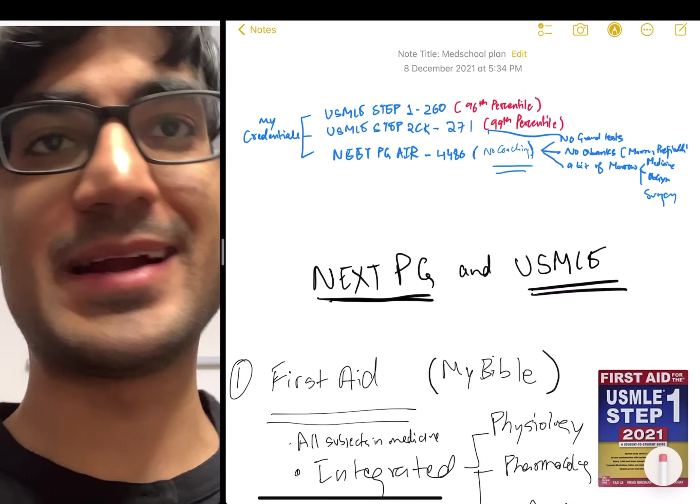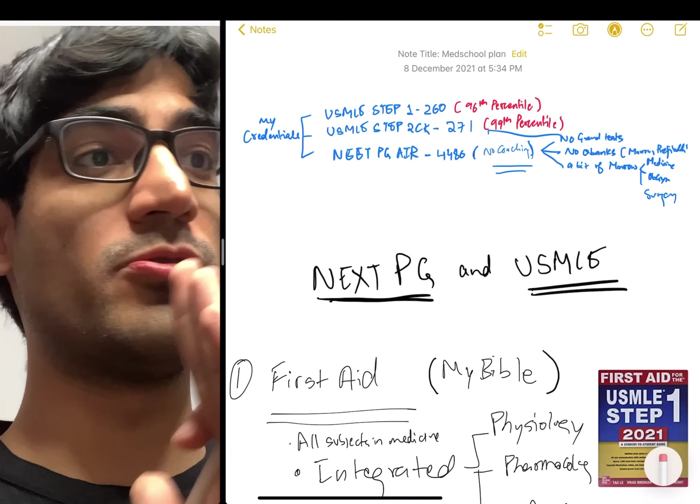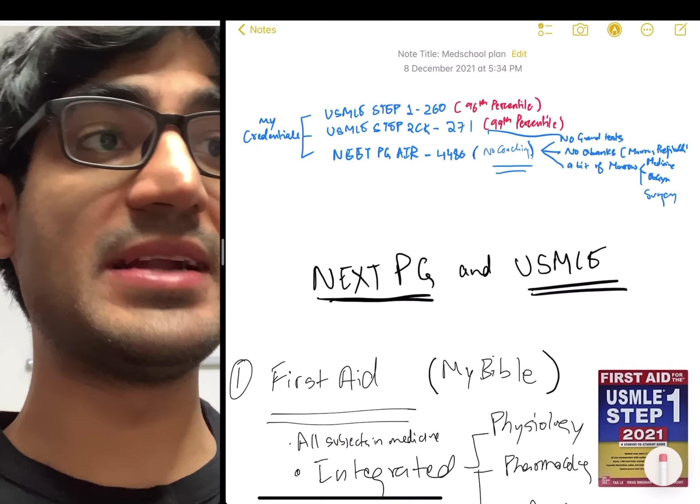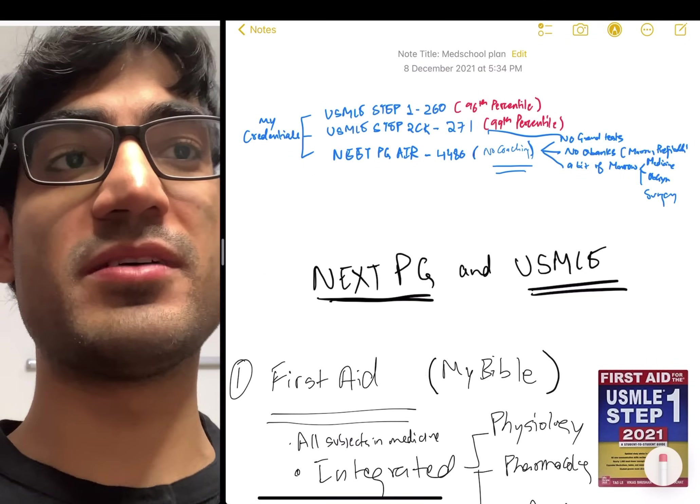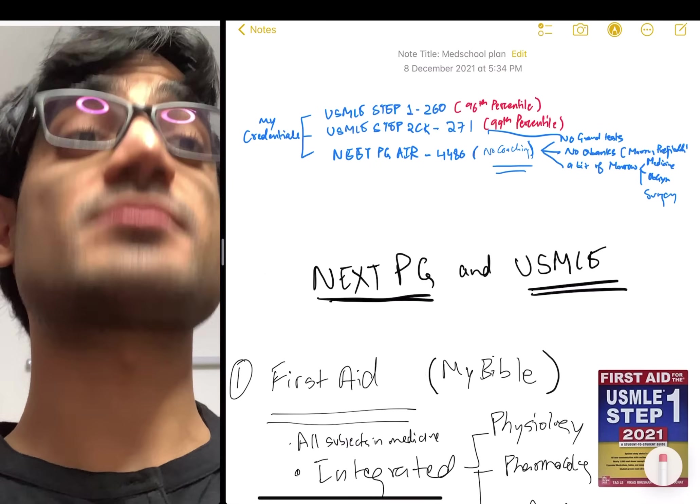What that means is I did not do any grand tests, no question banks like Marrow or Prep Ladder, no Bhatia, no DAMS. I did a little bit of Marrow's videos from medicine, OBGYN and surgery. But other than that, I did not prepare for NEET PG at all, but got a 4,480 rank.